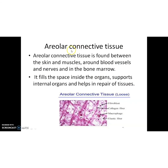The next connective tissue is areolar connective tissue. It is found between the skin and muscles, around blood vessels and nerves, and in the bone marrow. It fills the space inside the organs, supports internal organs and helps in repair of tissue.